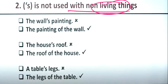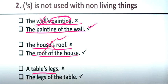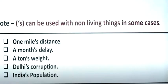So apostrophe-s is not used with non-living things. Like the wall's painting - that's incorrect. The correct form is the painting of the wall. Similarly, the house's roof is wrong; it should be the roof of the house. A table's legs is incorrect; use the legs of the table. This is how the language works.